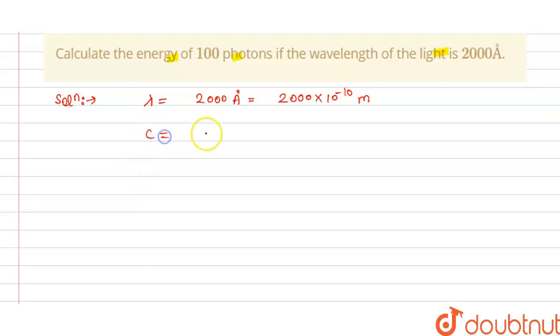2000 multiplied by 10 power minus 10 in meters. So we have the speed of light C is 3 into 10 power 8 and we know that Planck constant H is 6.625 into 10 power minus 34.